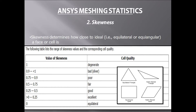Skewness defines how close a cell is to the ideal equiangular or equilateral shape. The following table lists the range of skewness values and corresponding cell quality. A cell with skewness of 1 is degenerate — that is the worst cell in our meshing — and we have to improve it. A cell with skewness of zero is equilateral, which is ideal.